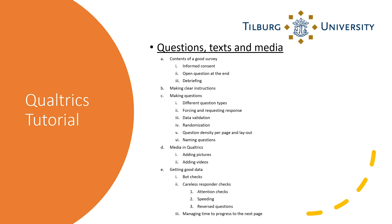There's a lot of information available about Qualtrics on the World Wide Web. In this tutorial, specifically about building your survey, what I'll discuss is what goes into a good survey. It should have an informed consent, an open question at the end, and a debriefing. But also, how do you make clear instructions for your participants to complete your survey? How do they know how to fill in the data that you need them to give you?